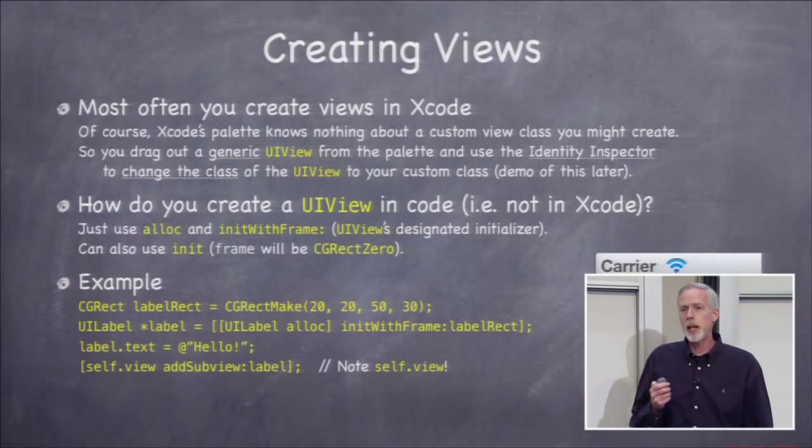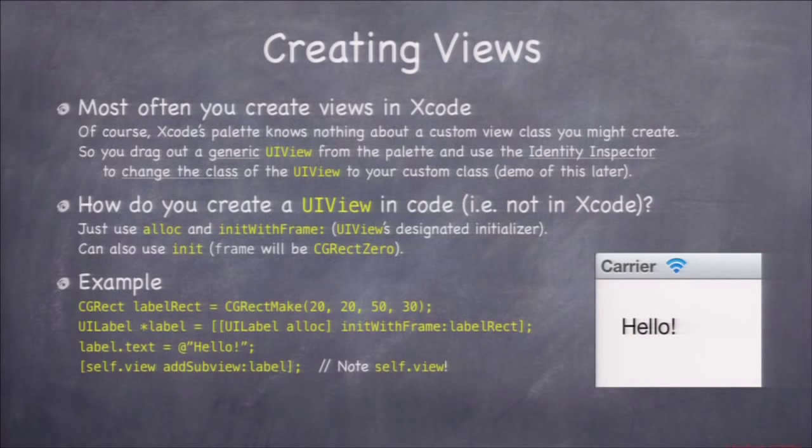So here's an example of creating a UI label in code. You see I said UI label init with frame. I gave it a rectangle. That's in the super view's coordinate system. And then I add sub view, that label, to self dot view, which is that top level view in my view controller. And so it ended up at 20x and 20y, and it's 50y and 30 high in my MVC's view.